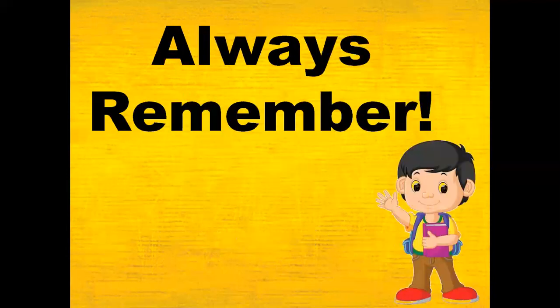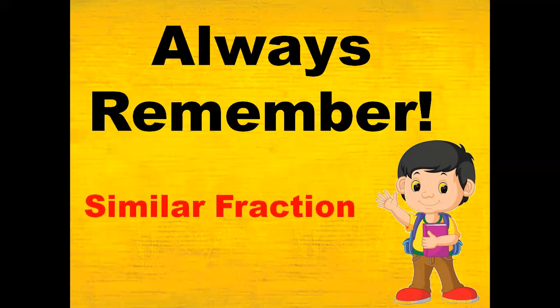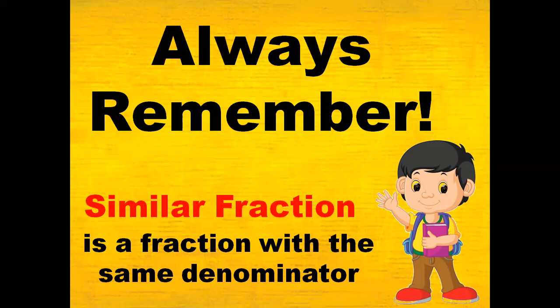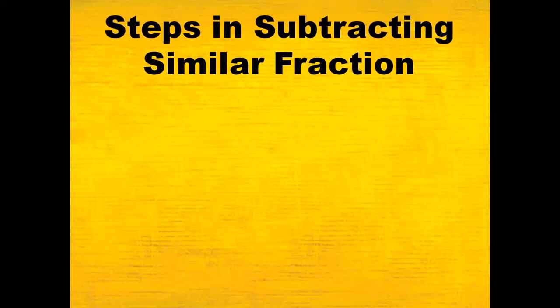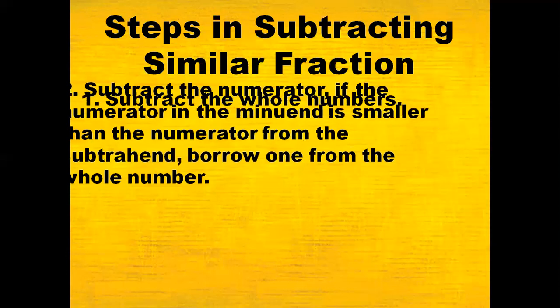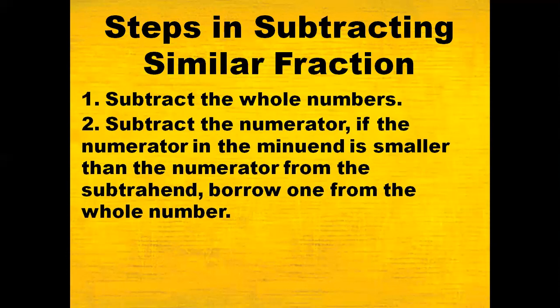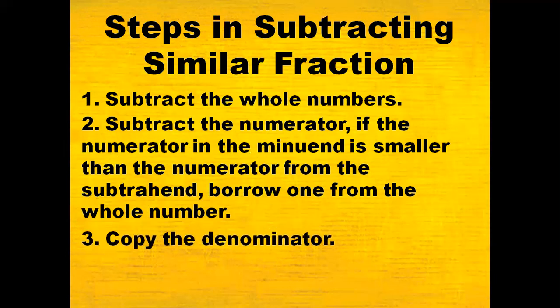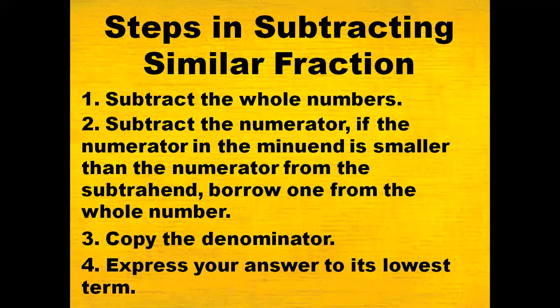Always remember: a similar fraction is a fraction with the same denominator. The steps in subtracting similar fractions are: first, subtract the whole numbers; second, subtract the numerators — if the numerator in the minuend is smaller than the numerator from the subtrahend, borrow one from the whole number; step 3, copy the denominator; and step 4, express your answer in its lowest term.